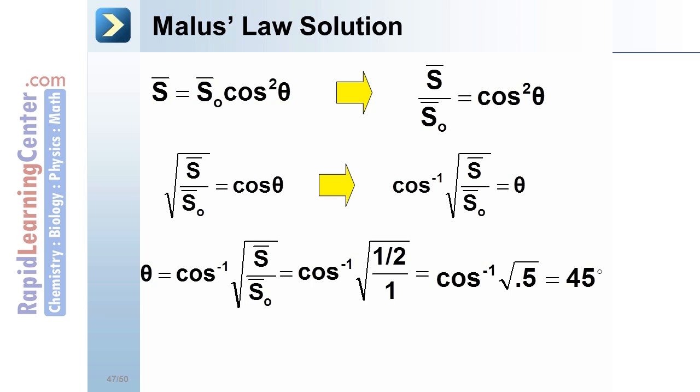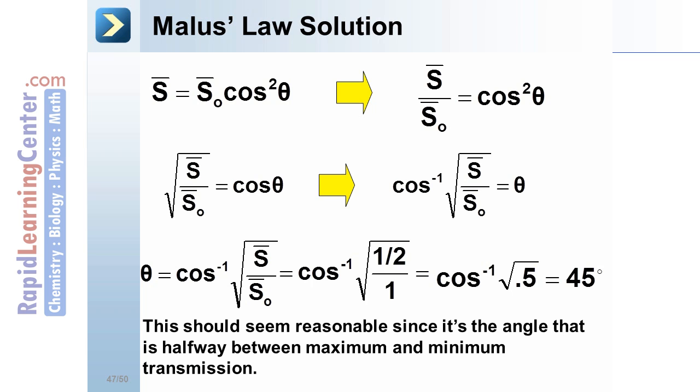Which should seem kind of intuitive, because after all, 45 degrees would be halfway between complete transmission and zero transmission. And we are cutting the light intensity by one-half.